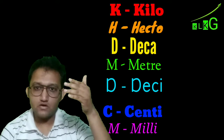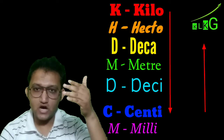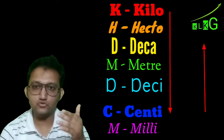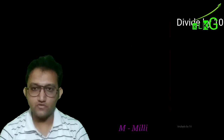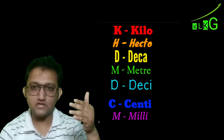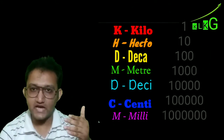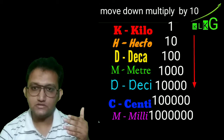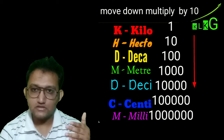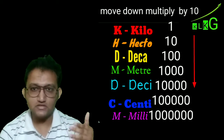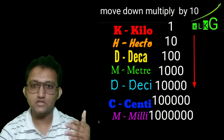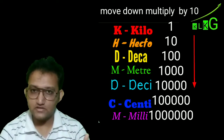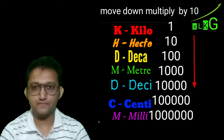When we come from top to bottom in this chart, we have to multiply by 10 each step. For example, 1 kilometer is equal to 10 hectometers, 100 decameters, 1000 meters, and 10,000 decimeters — and so on.